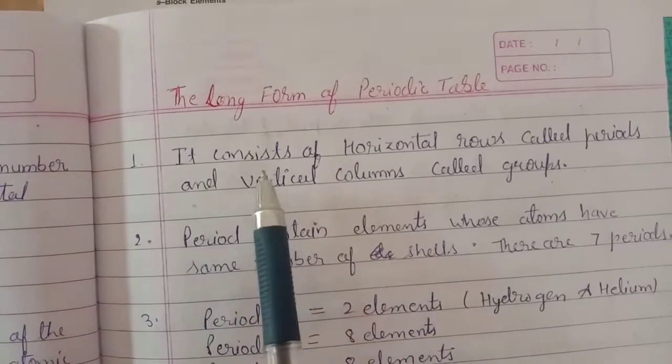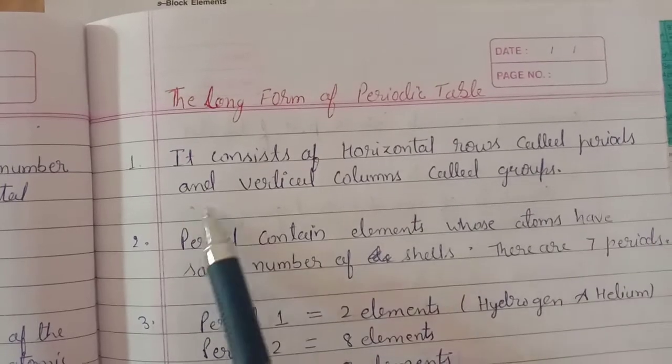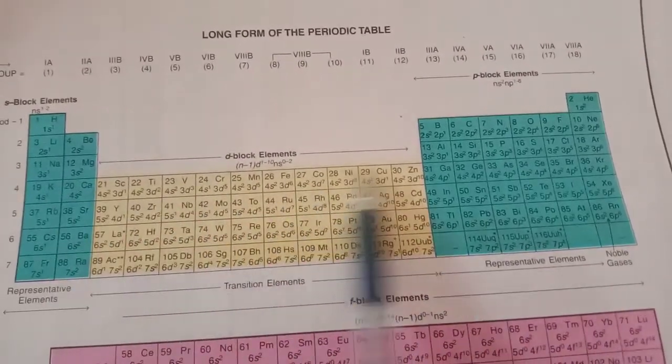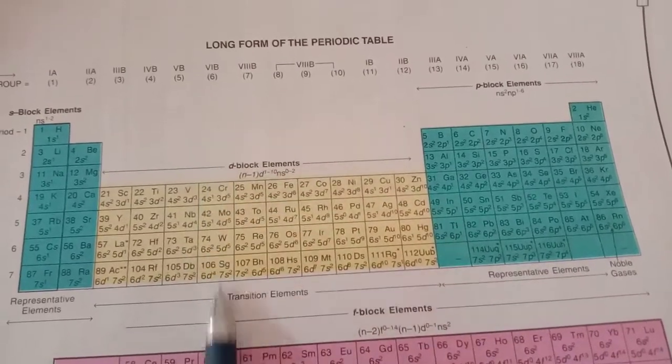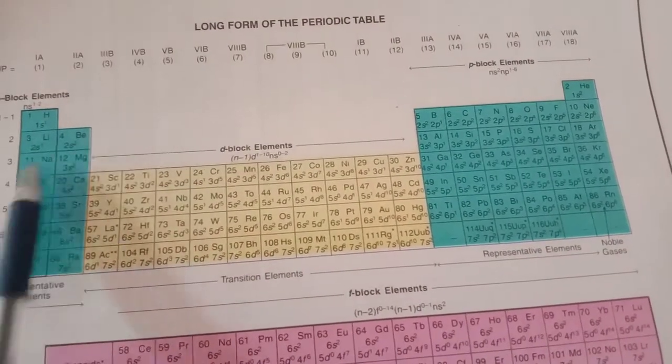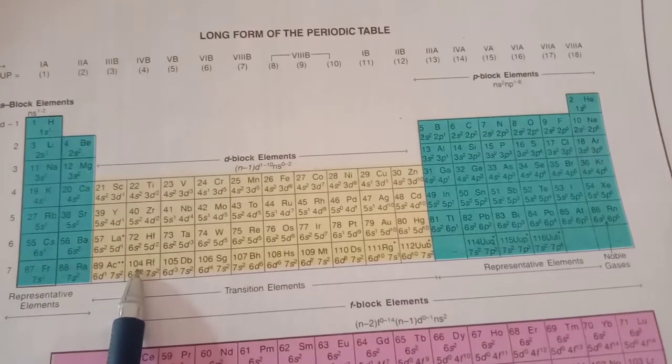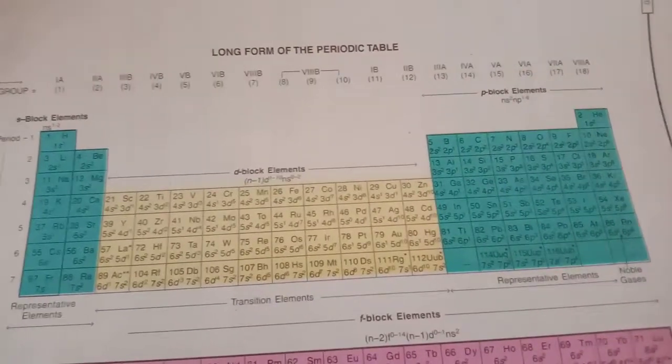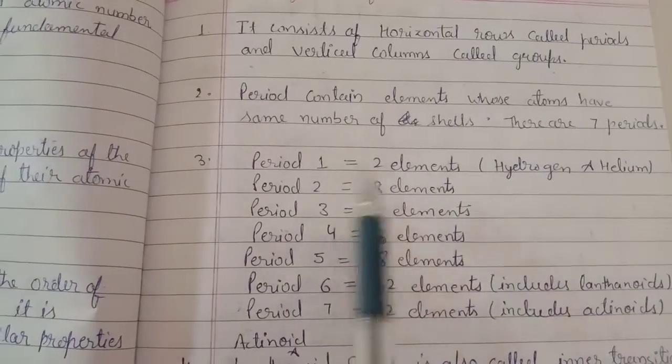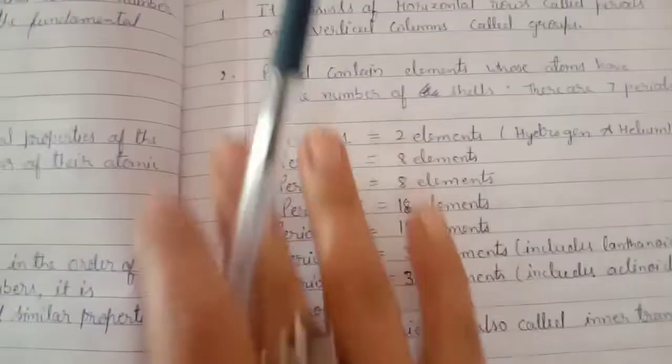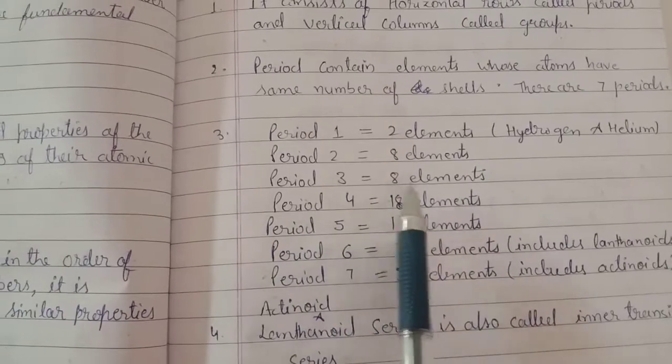The modern periodic table consists of horizontal rows called periods and vertical columns called groups. Look here, this is the modern periodic table. The horizontal lines are called periods, and the downward columns are called groups. There are a total of seven periods: first, second, third, fourth, fifth, sixth, and seventh. And there are 18 groups in the modern periodic table. Period number one has only two elements: hydrogen and helium. Period number two has eight elements, and period number three also has eight elements.